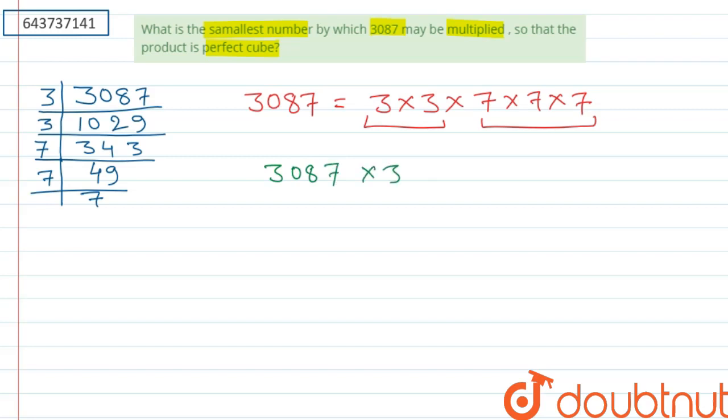So that it will become 3 to the power 3 times 7 to the power 3, and that is a perfect cube number. So our required number is 3. This is our answer. Thank you.